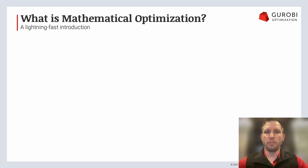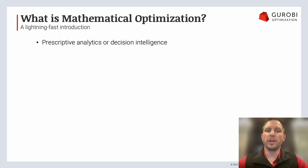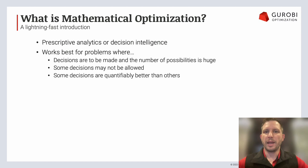Now that we've talked about how mathematical optimization can add value to and complement data science projects, let's get into a lightning-fast introduction of what mathematical optimization is. It falls under umbrella terms like prescriptive analytics or decision intelligence, and it has three key characteristics. First, there are decisions to be made, and the number of possibilities is sometimes really, really large — not hundreds or thousands, but on the order of the number of grains of sand on Earth or atoms in the universe.